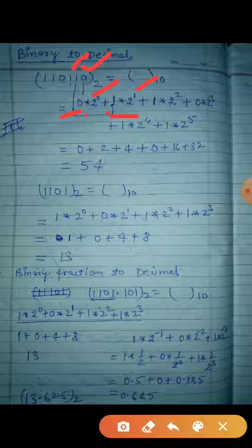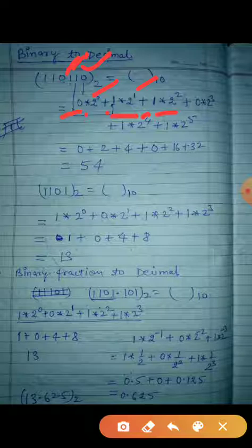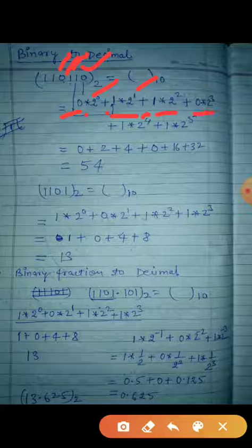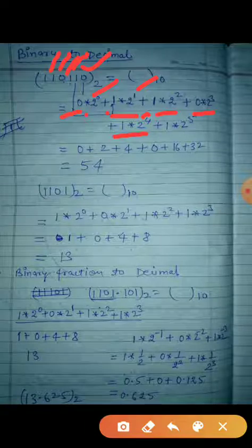The first power is 2 to the power 0, the second you will write as 2 to the power 1. Plus, the third digit is again 1: 1 into 2 to the power 2. Plus, the next digit is 0: 0 into 2 to the power 3. Plus, the next digit is 1: 1 into 2 to the power 4. Plus, 1 into 2 to the power 5.